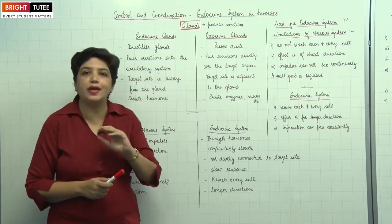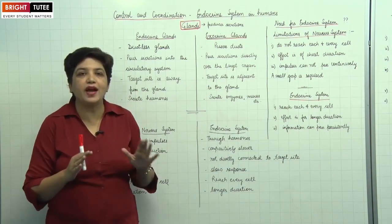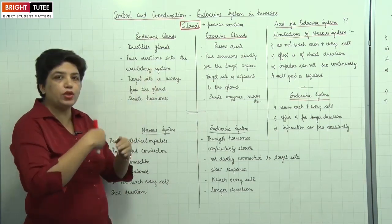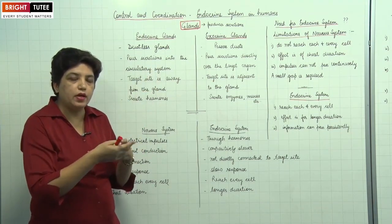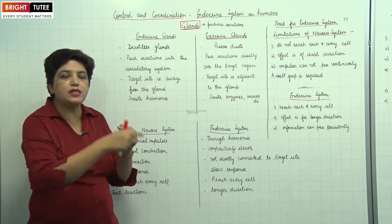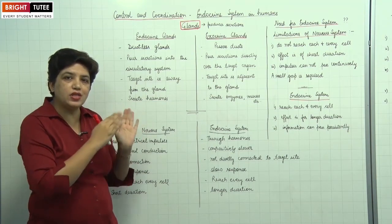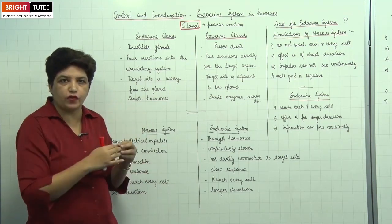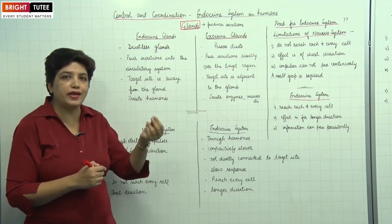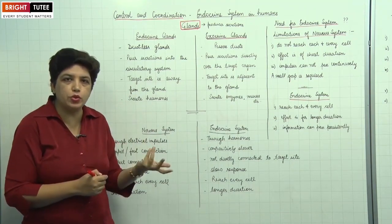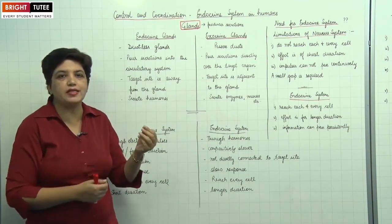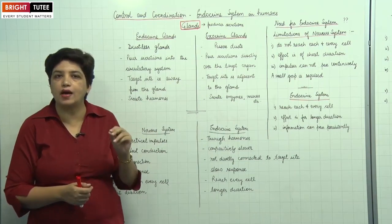The endocrine glands are called ductless glands — they do not have ducts. So they pour their secretions directly into the circulatory system, into the blood. As the blood circulates in the body, it carries those secretions to each and every cell of the body. These hormones then reach their target site, where they stimulate the organs. Those sites are known as target sites or target organs.